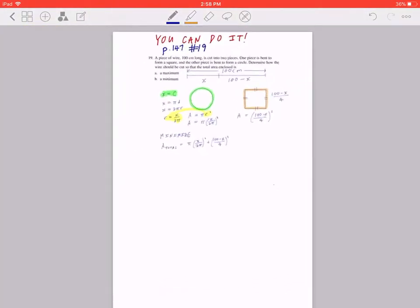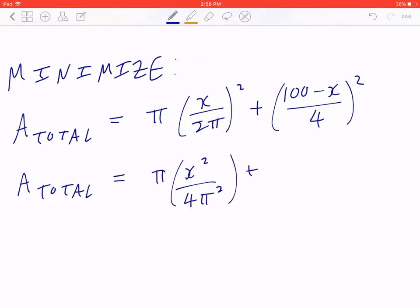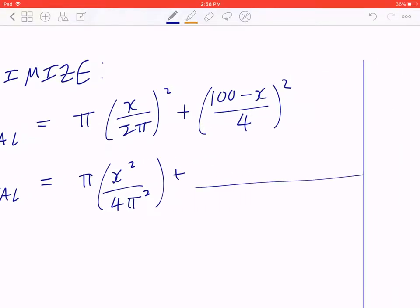which is pi times x divided by 2 pi quantity squared plus 100 minus x divided by 4 quantity squared. Now, let's draw a line here. We'll compare the answers in a moment. Before you take the derivative, set it to 0 and solve for x, let's rewrite this. So this will give you pi times x squared divided by 4 pi squared plus, if you look at the denominator, 4 times 4 is going to be 16. If you expand the numerator, that's going to give you 100 times 100, which is 10,000 minus 100 times x times 2, that's 200x plus x squared.